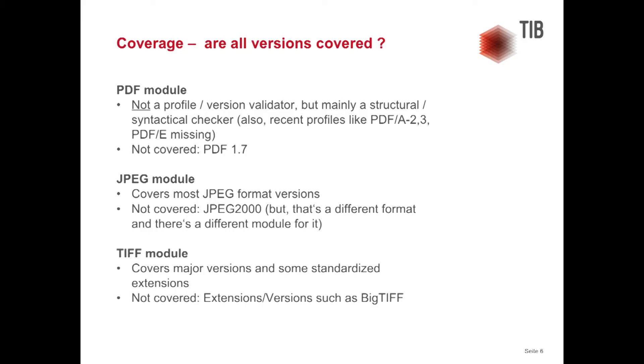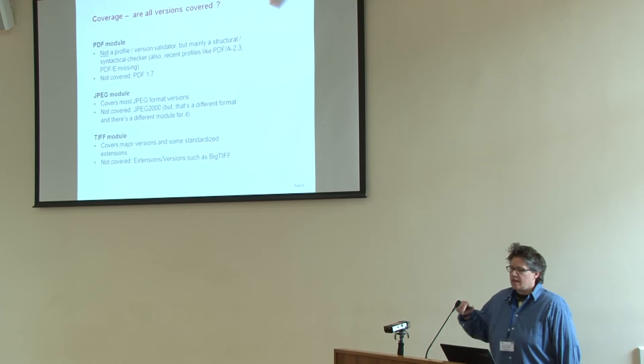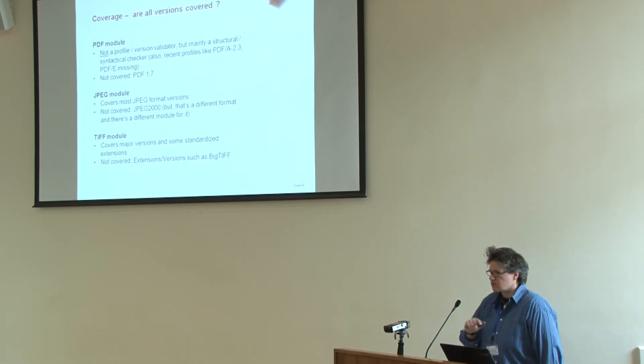I'll focus on coverage, stability, and validation rules. On coverage: if we call something a PDF module, it's natural to assume it covers every PDF — but PDF is not just PDF. There are many different versions. The JOV PDF module is not a profile and version validator; it's mainly a structural and syntactical checker. There is the basic PDF 1.7 specification describing what any PDF looks like structurally, and on top of that, ISO standards like the PDF/A suite define profiles.